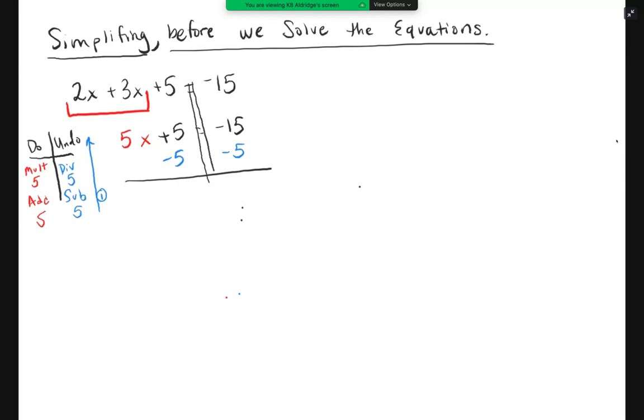I have 5 minus 5. This is 0. 5x plus 0 is 5x. So 5x equals negative 15 minus 5 is negative 20. First step done.